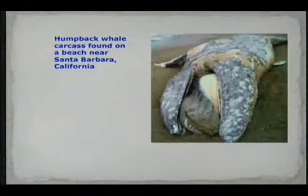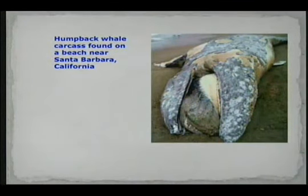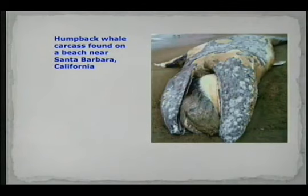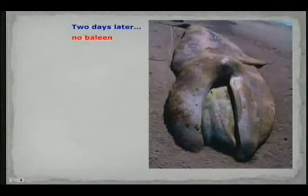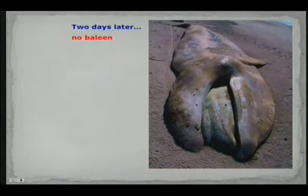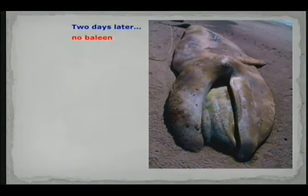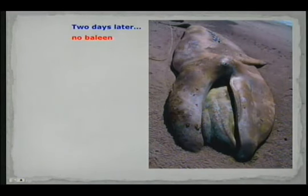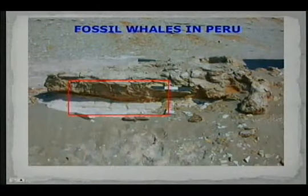How do we know that? From observations in modern times. This is a great whale found a few years ago on a beach near Santa Barbara, California — you can see baleen there. Two days later, no baleen. The whale was also flipped over — no baleen, only the tongue. The skin is gone as well.